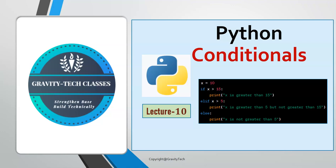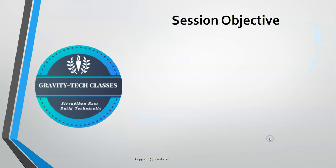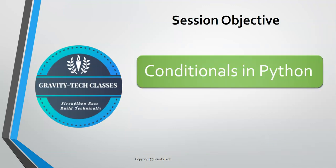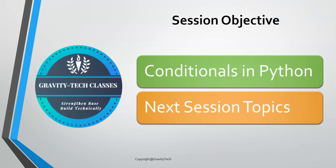In this current course, we are learning the Python programming language — the basics of Python. We have already covered 9 lectures on the Python course, and now this is the 10th lecture, which we will be covering on Python conditionals. If you want to learn Python from scratch, go to the channel and look at the Python playlist. The objective of this session is where you will learn about Python conditionals, and at the end of this session, I will tell you the topic of the next session.